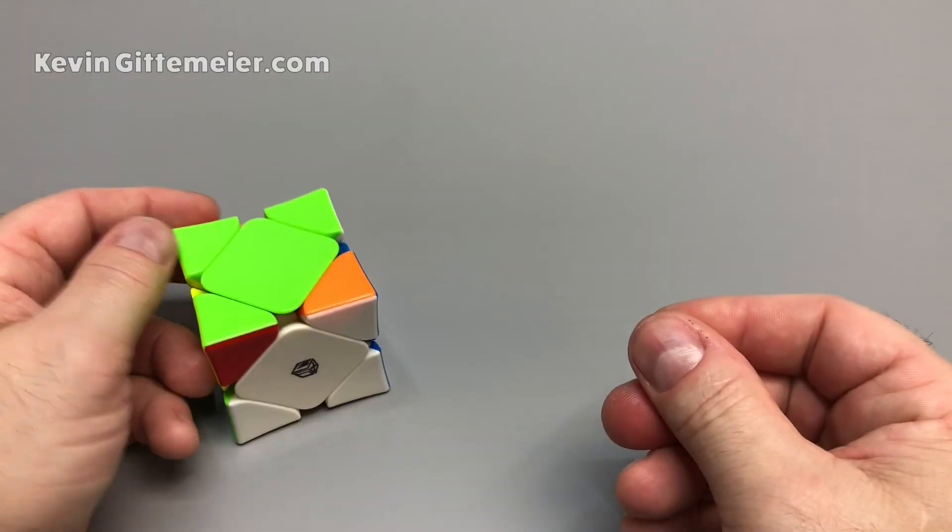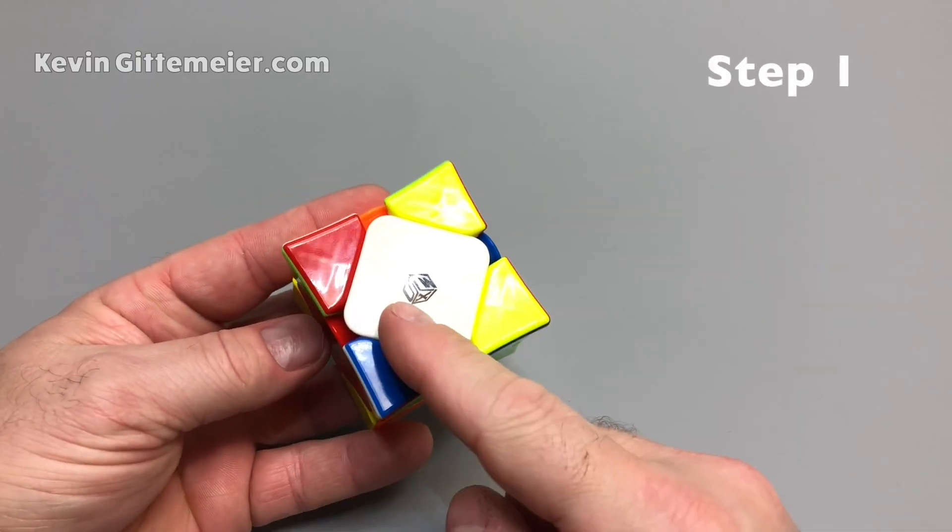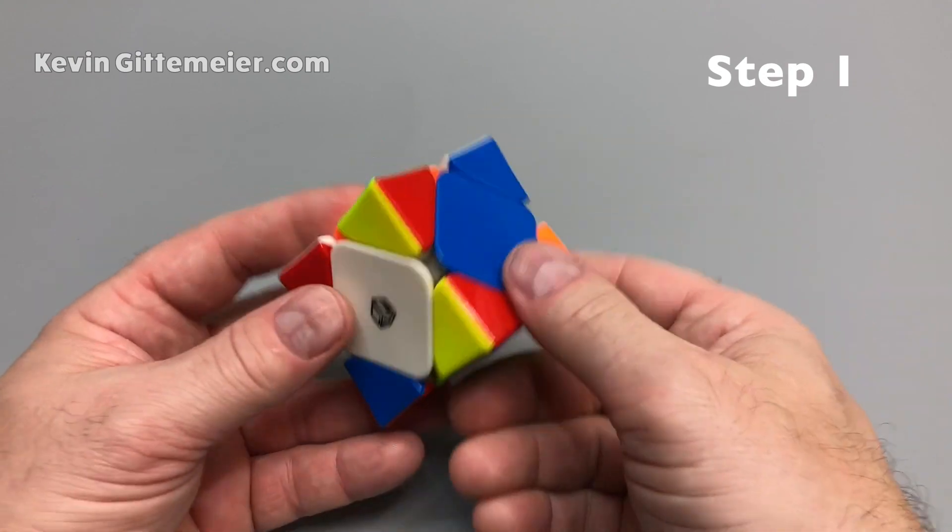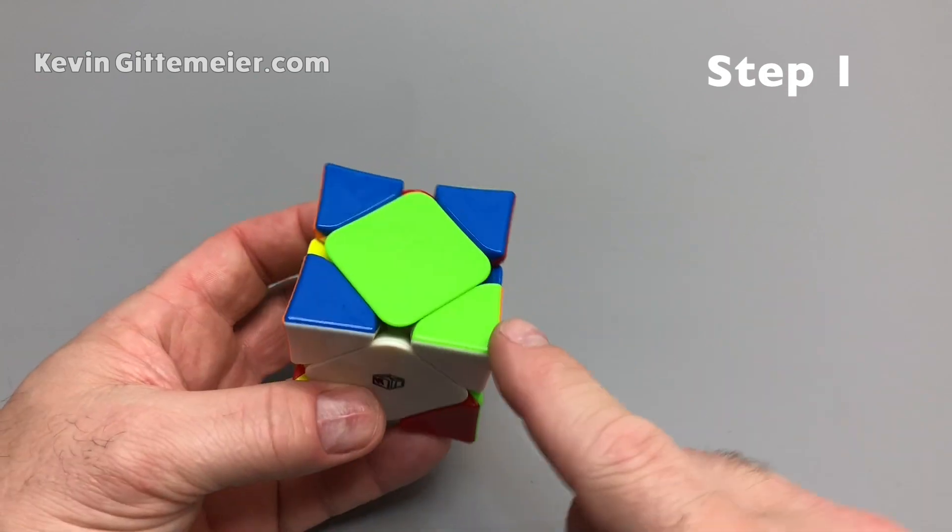Because what will end up happening is this. Once you wrap your head around the way the skewb rotates, it's pretty easy to solve the bottom layer. We just want to match these white pieces down, touching the white centers. But we have to make sure that the side colors match.